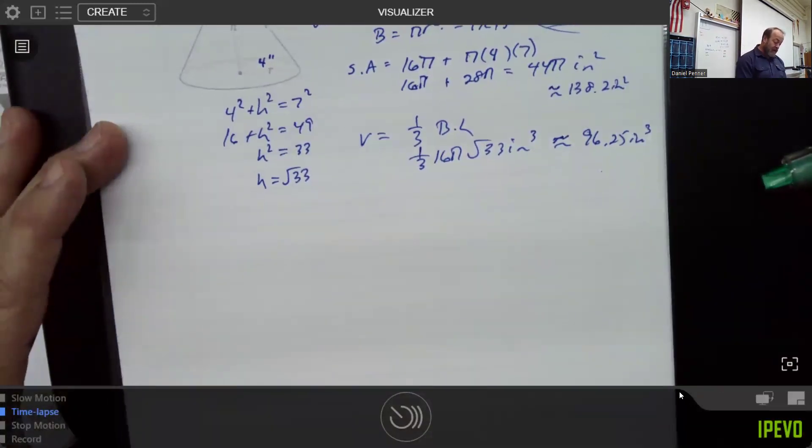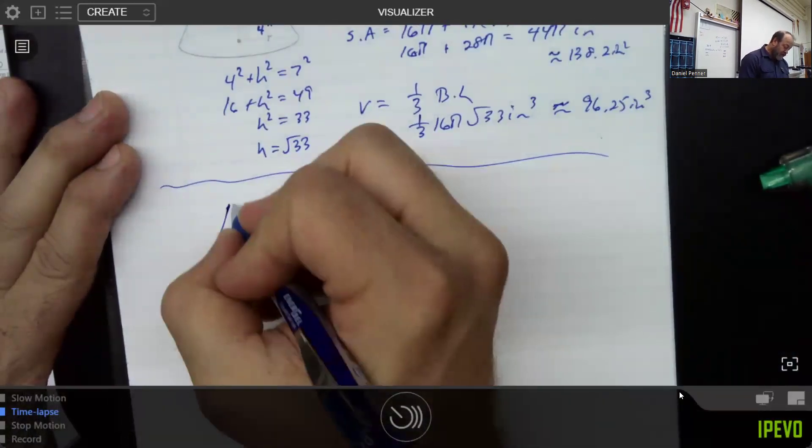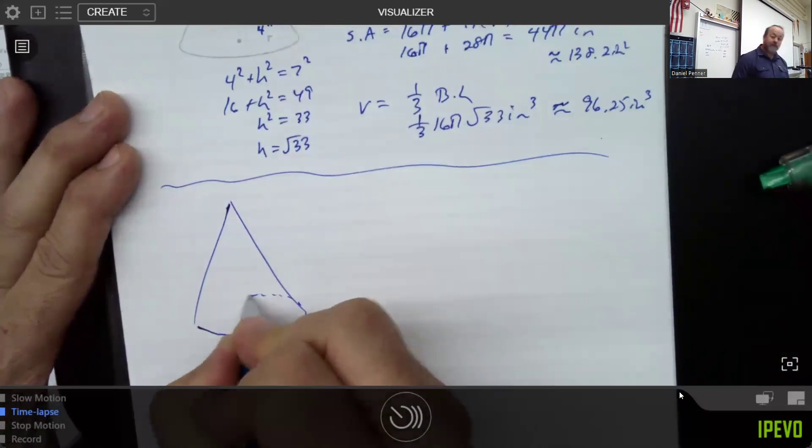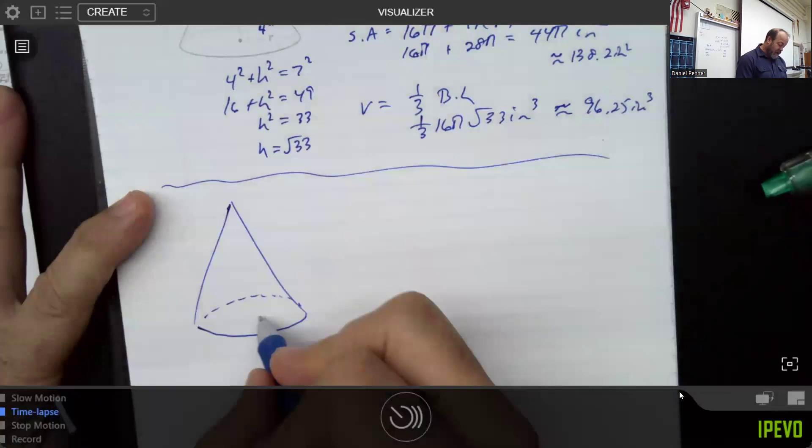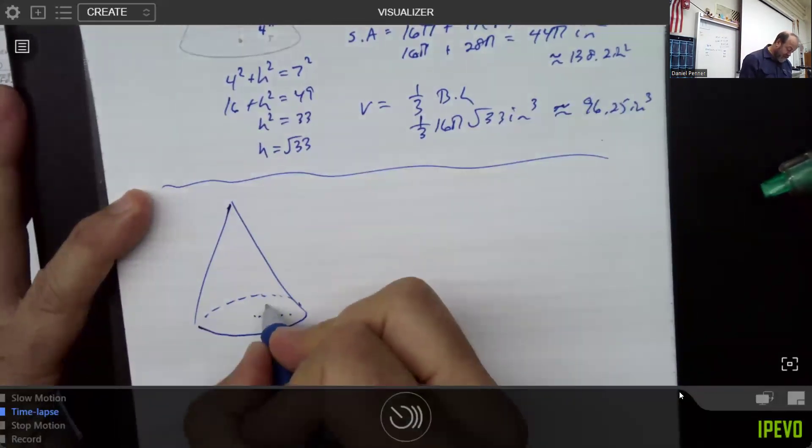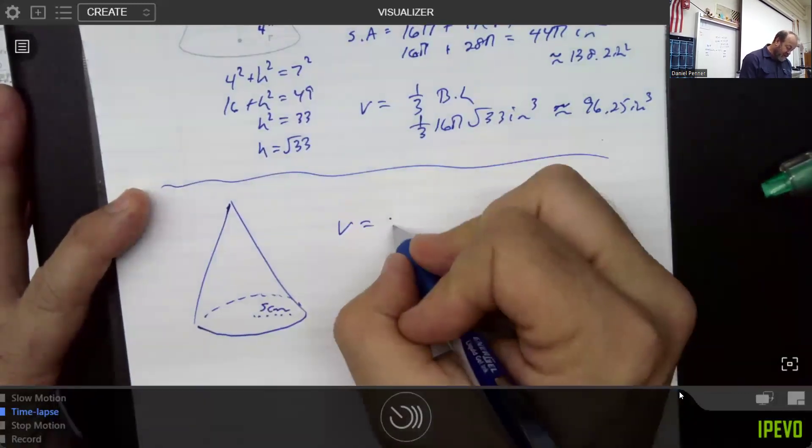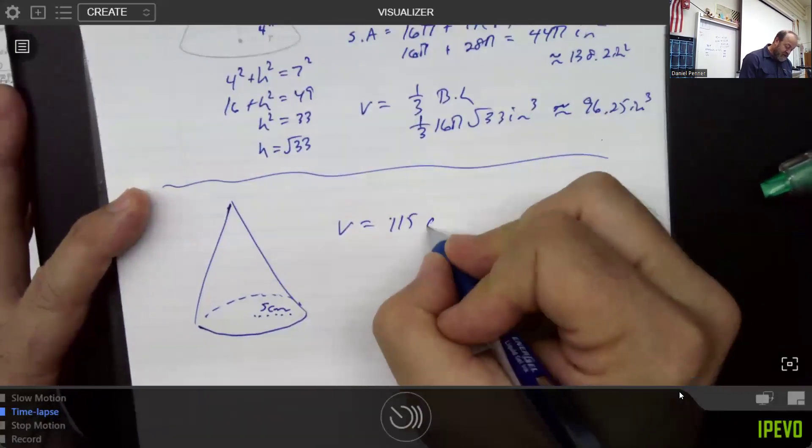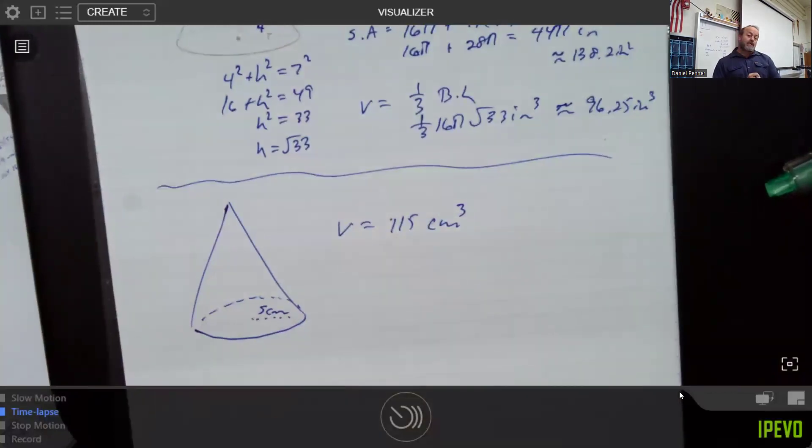Now, sometimes we might be a little bit mean to you and ask you to do something a little bit harder. So imagine if we will, that I started with something a little bit different. And let's say I told you that I know that the radius of my given cone was something like five centimeters. But I told you that the volume of my cone is, say, 115 centimeters cubed. But that's all I told you. So notice that what I failed to give you is the height or the slant height, but I just told you how much liquid fits in it.